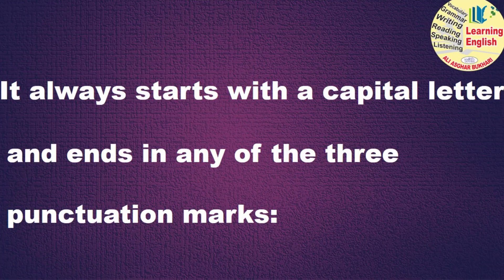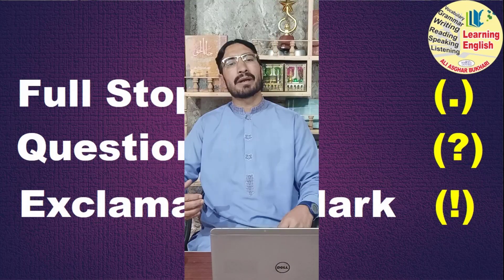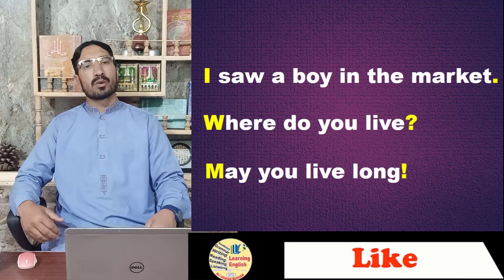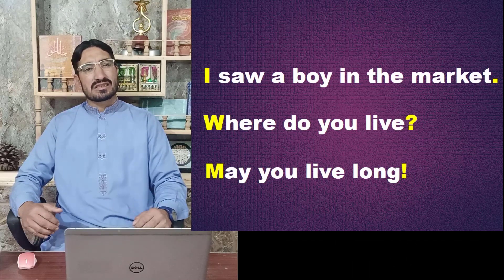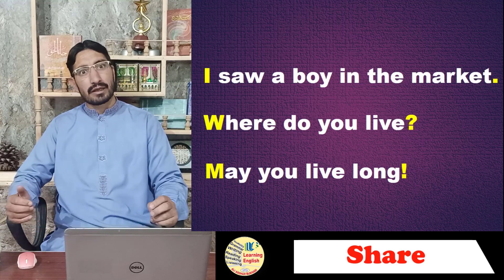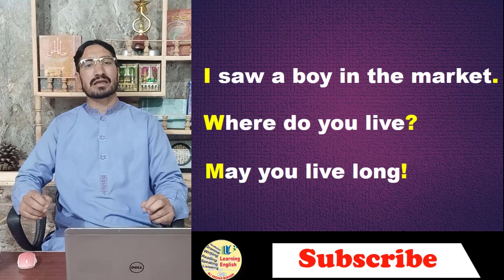In English, a sentence always starts with a capital letter and ends in any of three punctuation marks. They are: full stop, question mark, and exclamatory mark or sign of exclamation. For example: 'I saw a boy in the market.' Here 'I' is capital and this group of words ends in a punctuation mark which is called a period or a full stop.